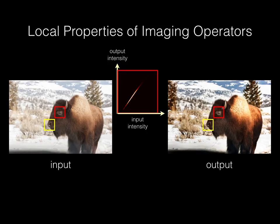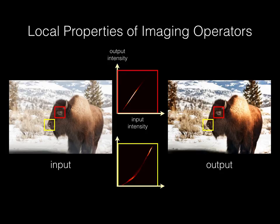What about this patch, which overlaps an image edge? Even though there's lots of stuff going on with this operator, locally the relationship is close to a curve. For many practical operators used in computational photography, the transformations are curves when you choose the appropriate spatial scale. This motivates our choice of modeling transformations as local curves.